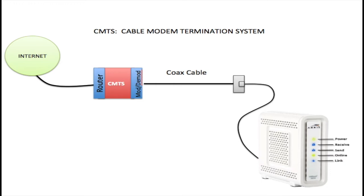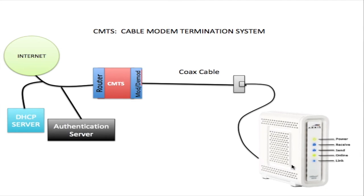Once the CMTS is reached, it automatically sends a confirmation file with the downstream and upstream bandwidth and communication timing for the modem to use. The modem sets up all of the parameters given by the CMTS, and once the CMTS confirms the modem can communicate with the new parameters, the connection between the CMTS and the modem is completed. At this point you will have a solid link light on the modem.